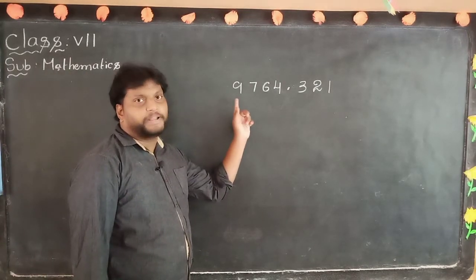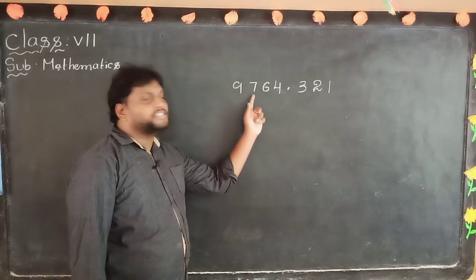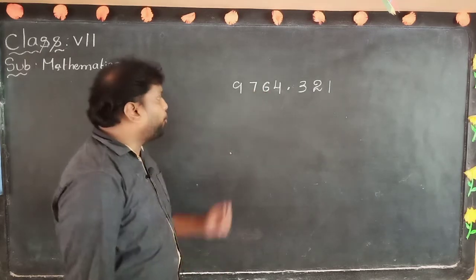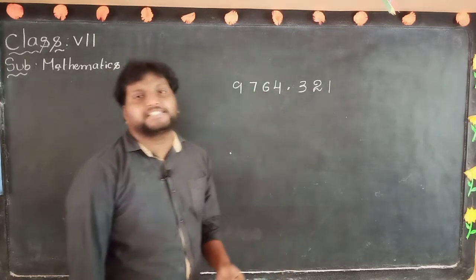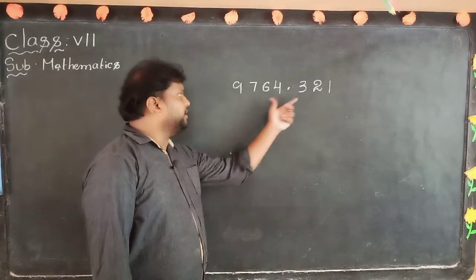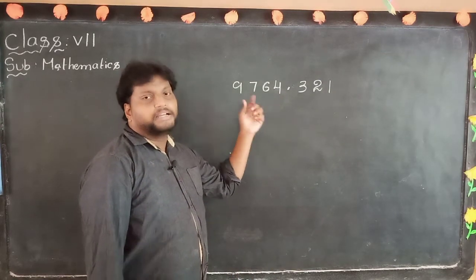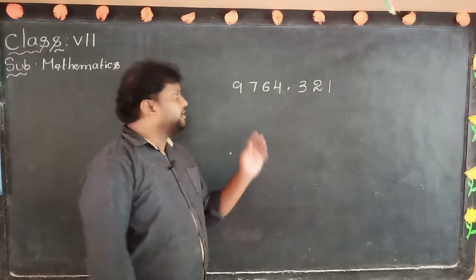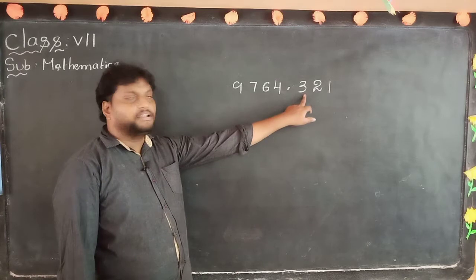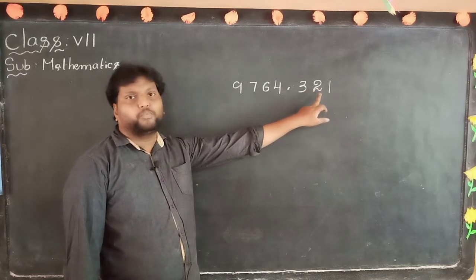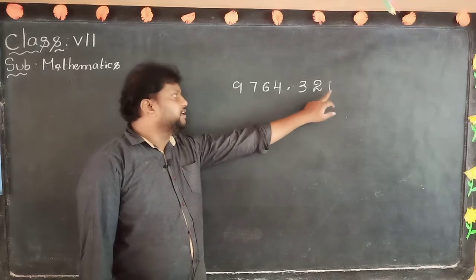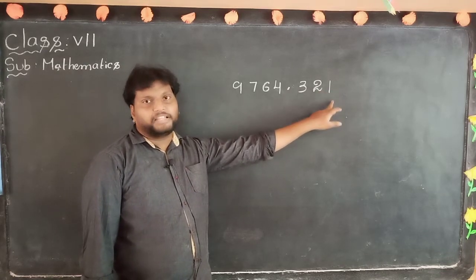9 is in thousands place, 7 is in hundreds place, 6 is in tens, 4 is in ones. Then after the point, 3 is in tenth place. Tenth is nothing but 1 by 10. In the whole part we should multiply with tens; the decimal part should divide with tens. Here first with 10, then 10 power 2 means 100, here 1 by 100, then 1 by 1000.